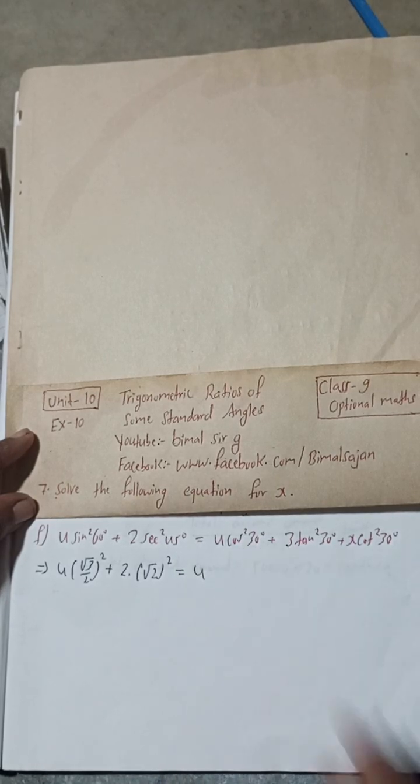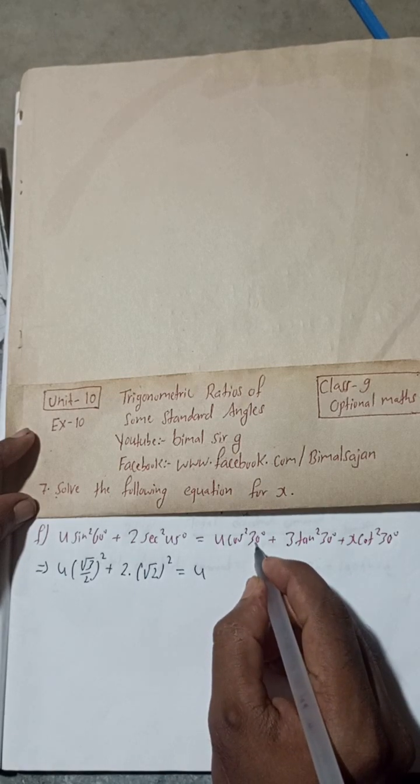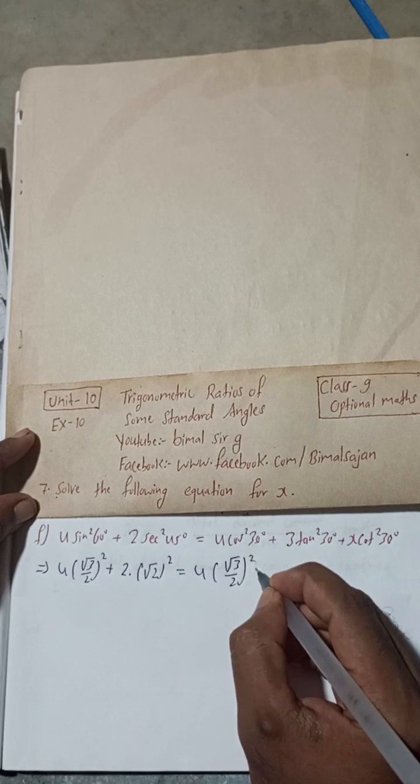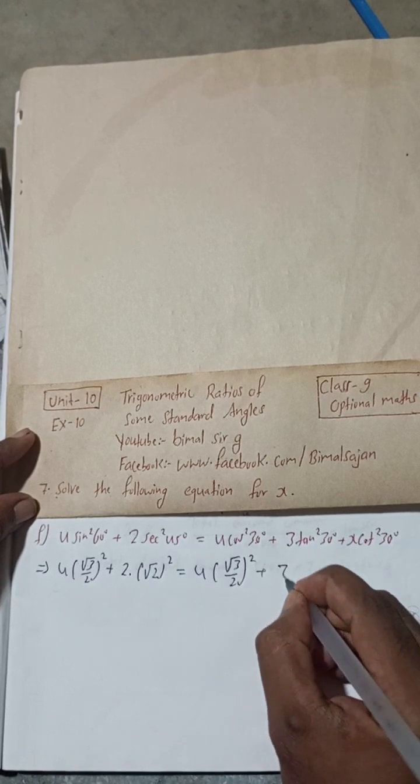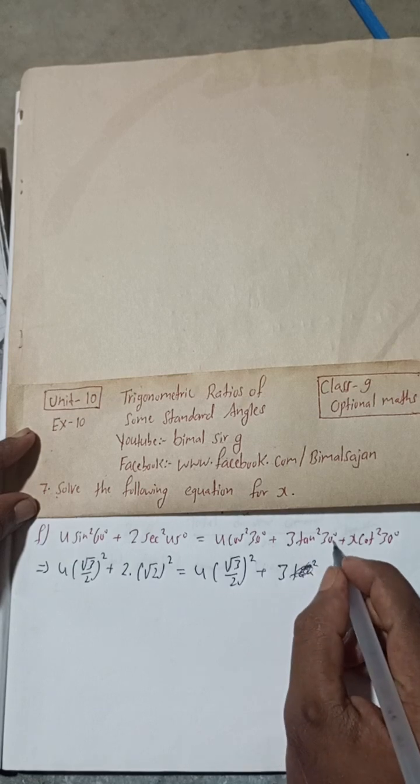4 cos²30°, so 4 and cos 30 value is √3/2, so this is (√3/2)² and this is square, plus 3 tan²30°...